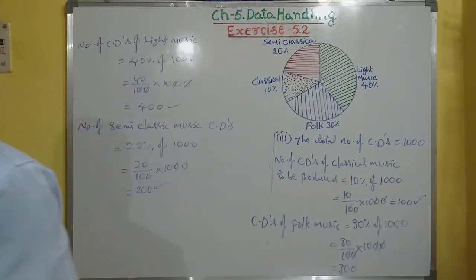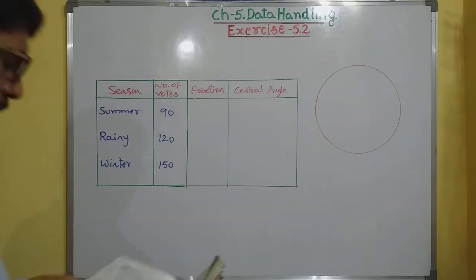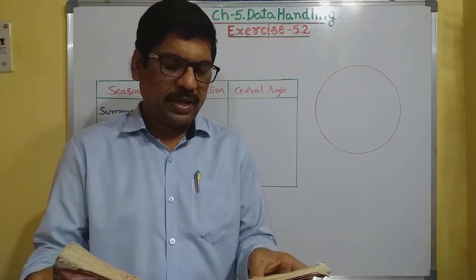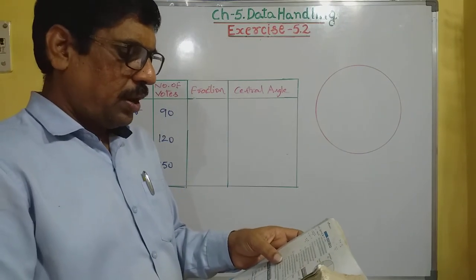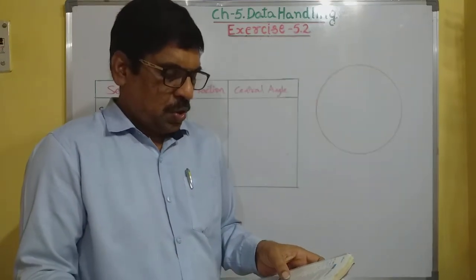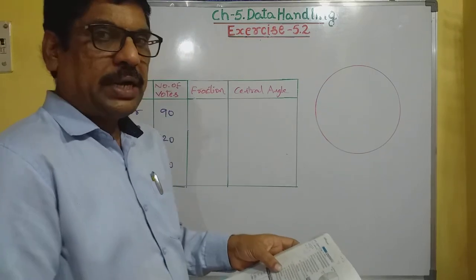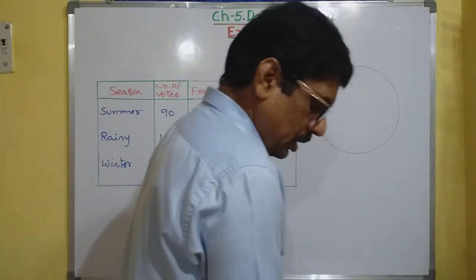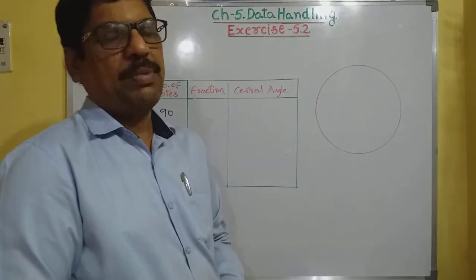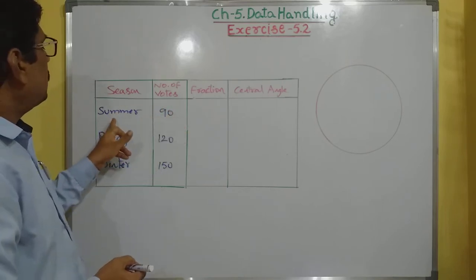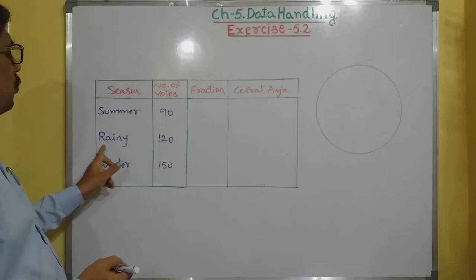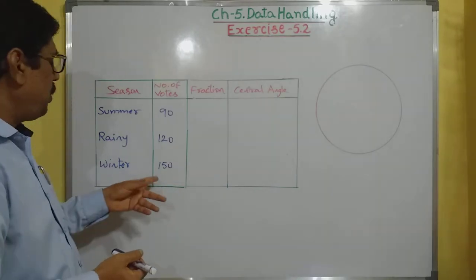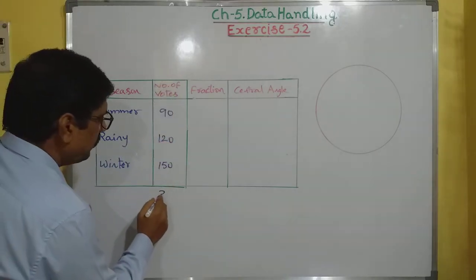Now the second problem: a group of 360 people were asked to vote for their favourite season — rainy, winter, or summer. We need to find which season got the most votes, find the central angle of each sector, and draw a pie chart. The votes are: summer 90, rainy 120, winter 150. The total is 360. More votes were secured for the winter season.